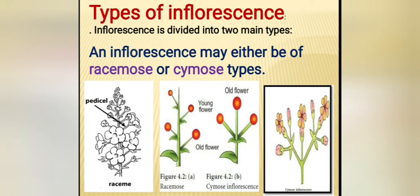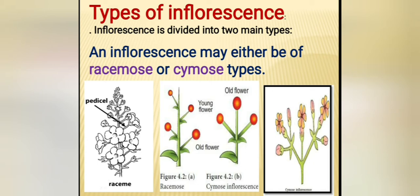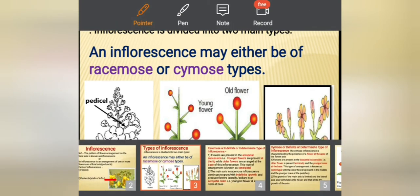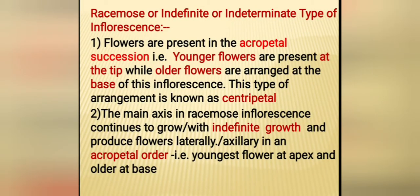Types of inflorescence - there are two types: racemose and cymose. In racemose inflorescence, growth of inflorescence axis is indefinite as the apex is not utilized in flower formation. Older flower at base, younger towards the apex. In cymose inflorescence, which is the definite inflorescence, growth is definite. Older flower at apex, younger towards the base - this is called basipetal succession.